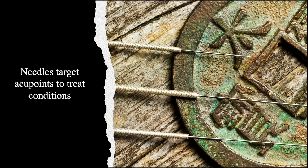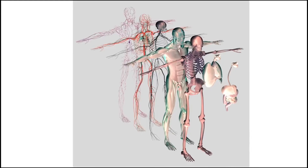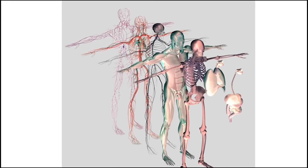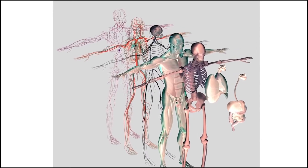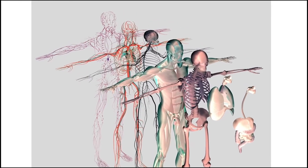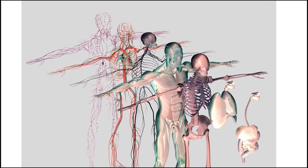These small needles are placed in specific points just below the skin to treat different conditions, including pain conditions. Practitioners of Western medicine are now researching how acupuncture works on nerves, blood vessels, and organ tissues.